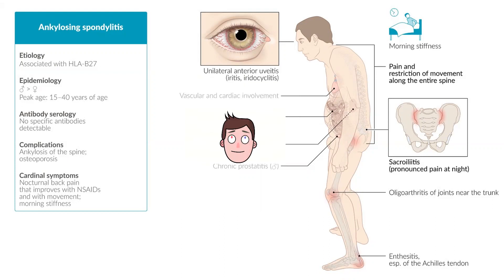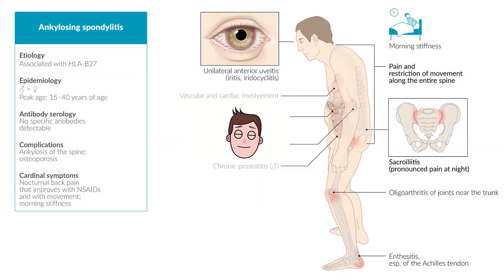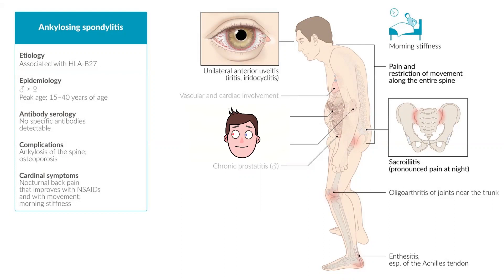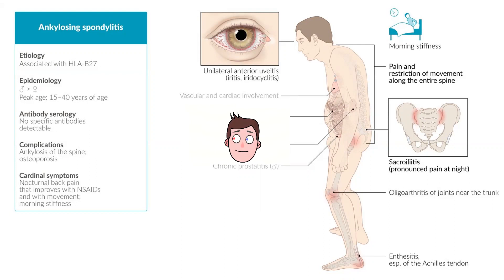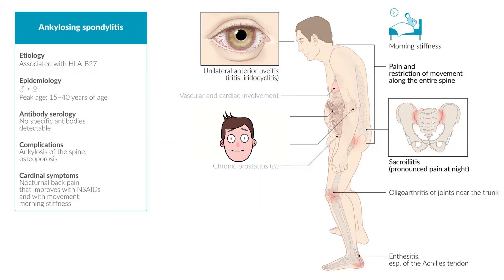The next symptom is vascular and cardiac involvement. A common cardiac complication is aortic regurgitation, where the aortic valve becomes incompetent and there's backflow of blood. You can also have changes in the conduction system of the heart causing heart blocks.